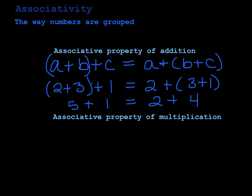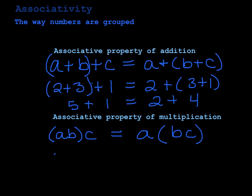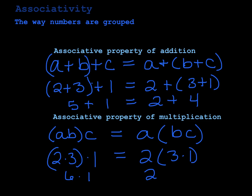The associative property of multiplication says the same thing. If I multiply (a times b) times c, it's the exact same thing as a times (b times c). Remember, the order of numbers was commutative — but if the parentheses, the groups, change, then that's associative. For example, (2 times 3) times 1 is 6 times 1, and 2 times (3 times 1) is 2 times 3, which is still 6. It doesn't matter where the parentheses go.